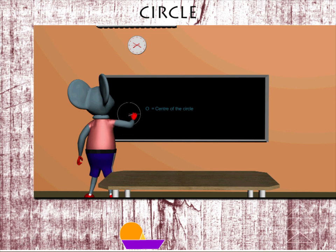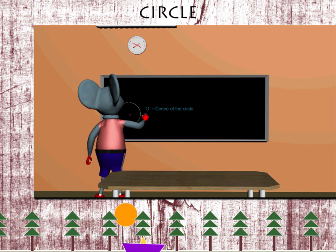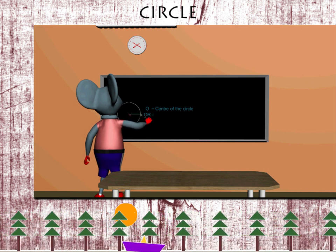He draws a line connecting the center with the curved outline of the circle and marks it OR called radius.